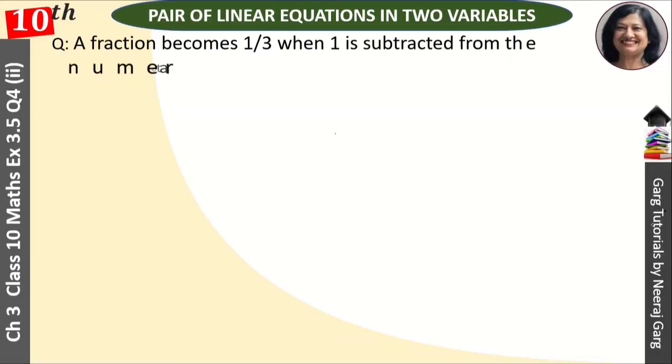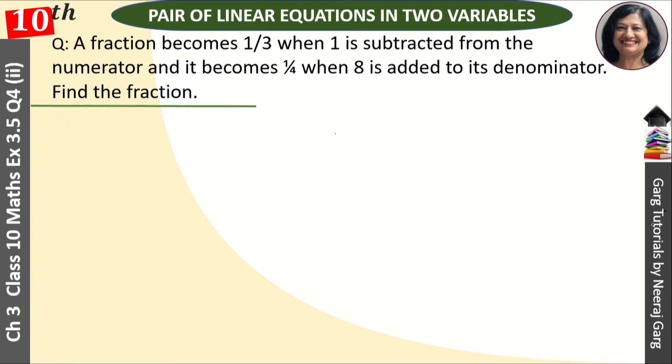Hi, this is Neeraj Garg and you are watching Class 10th Chapter 3, Pair of Linear Equations in Two Variables, Exercise 3.5, Question Number 4, second part. A fraction becomes 1 upon 3 when 1 is subtracted from the numerator and it becomes 1 upon 4 when 8 is added to its denominator. Find the fraction.